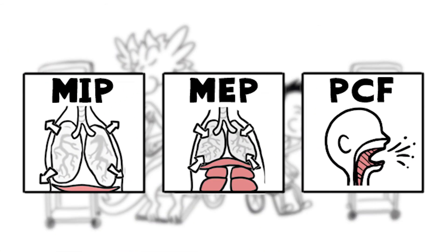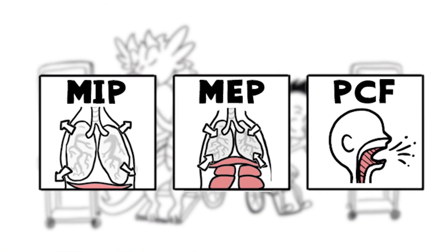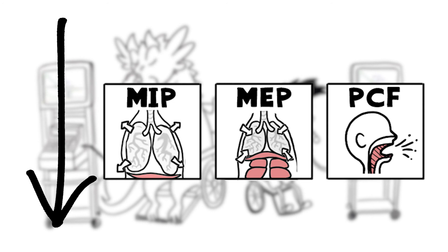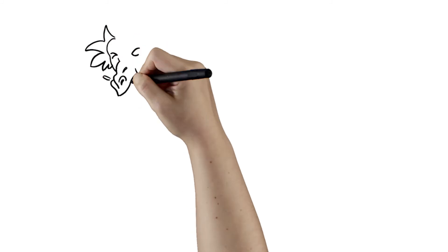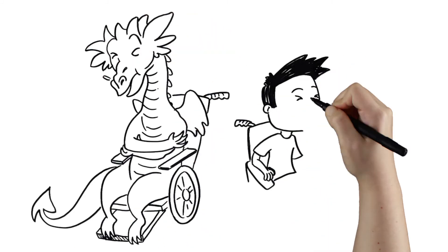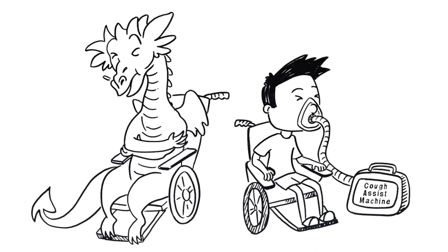When MIP, MEP, or PCF become low, or you are having trouble clearing mucus when you are well or sick, coughing can be assisted manually or with a cough assist machine. Assisting a cough will help you clear your airways better than you can do on your own.